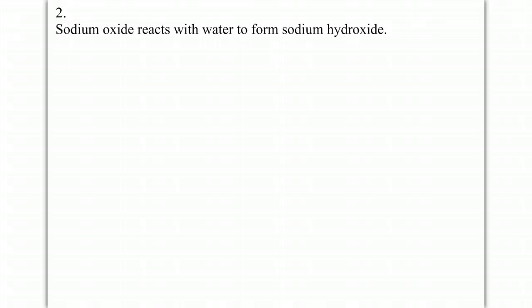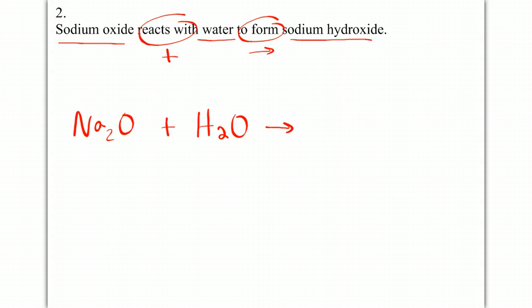Sodium oxide reacts with water to form sodium hydroxide. Sodium is plus one, oxide is minus two. Switch them, get rid of my charges. Reacts with means plus. Water is H2O to form. Sodium is plus one, hydroxide is minus one, plus one and minus one cancel. And there's my answer.